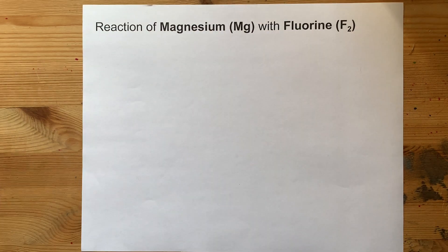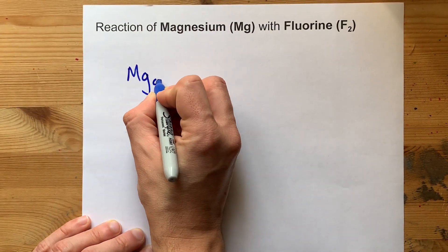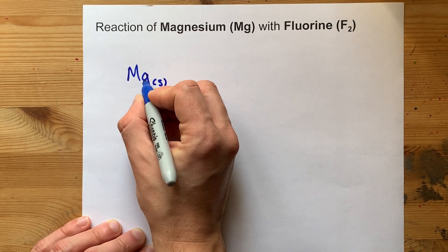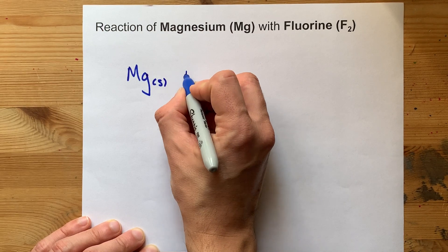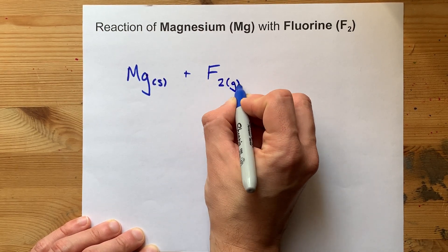When you react a metal with a non-metal, the most common thing to have happen is the electron exchange that I just mentioned. Magnesium loses two electrons, and fluorine atoms want to gain one electron each.